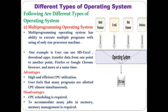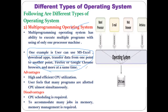In real life, using the multi-programming operating system, a user can use MS Excel, download apps, transfer data, and use Firefox or Google Chrome browser all at the same time. This is possible because of the multi-programming operating system's ability to handle jobs simultaneously using process scheduling.